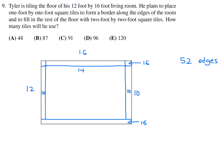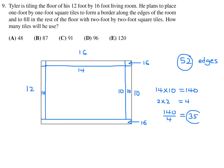The middle area is 14 by 10, which is 140 square feet. That area is filled with 2 by 2 tiles, each covering 4 square feet, so 140 divided by 4 gives 35 tiles for the middle. Total tiles: 52 border tiles plus 35 middle tiles equals 87. Number 9, the answer is B.